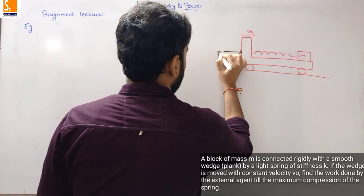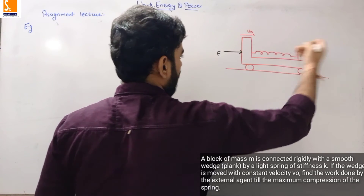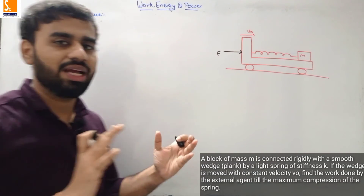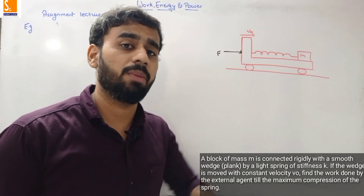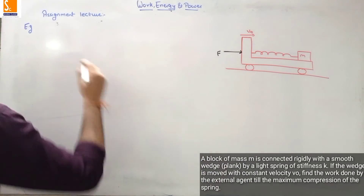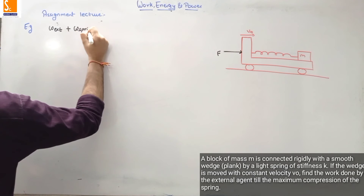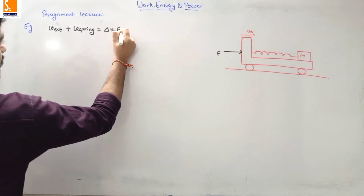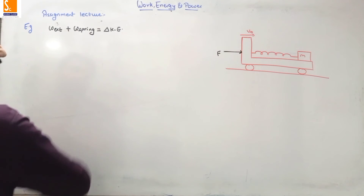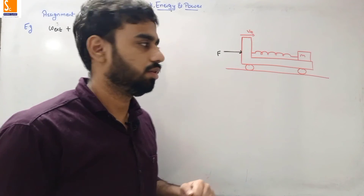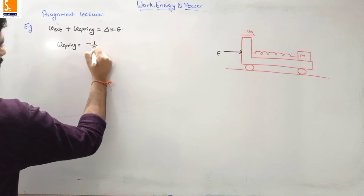Suppose the external agent applies force F on the wedge. Due to inertia, the block tends to move left, compressing the spring by X. Applying the work-energy theorem to the system: work done by the external agent + work done by the spring = change in kinetic energy. Work done by the spring = −½KX². At maximum compression, the block's velocity equals the wedge velocity V₀, so change in KE = ½MV₀².